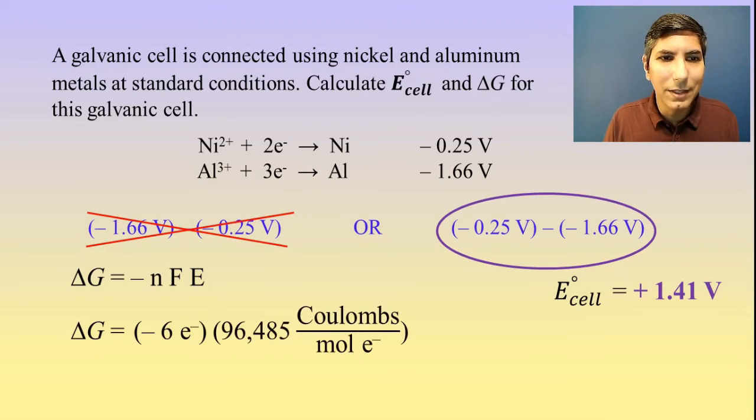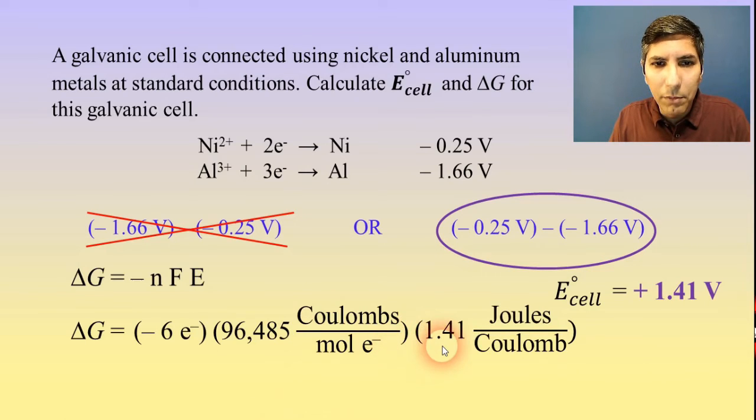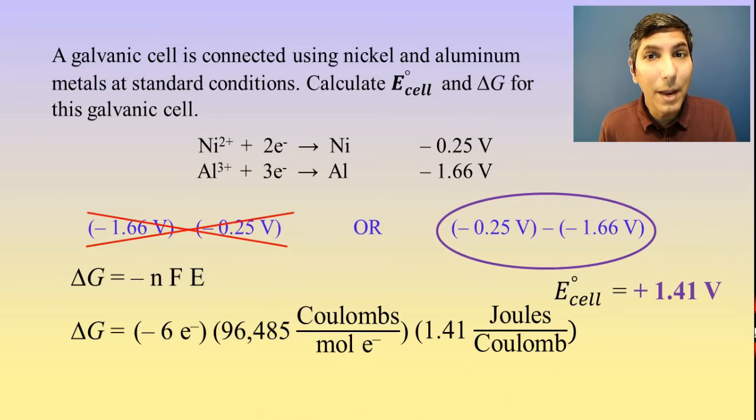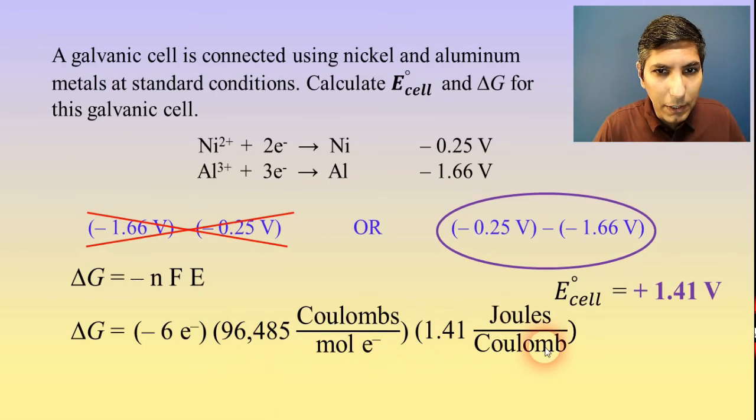F, Faraday's constant, is 96,485 coulombs per mole of electrons. And our E is our voltage that we just calculated, 1.41 volts. I'm going to write this as 1.41 joules per coulomb. Just so you know, 1 volt equals 1 joule per coulomb. I'm doing that so you can see how the units work out. The coulombs cancel and the electrons cancel as well.